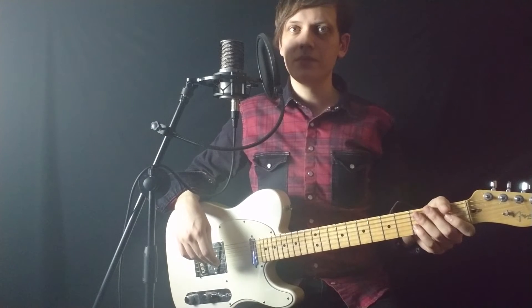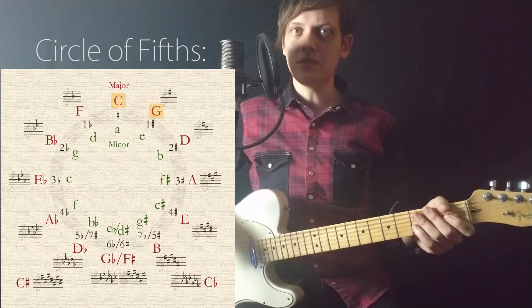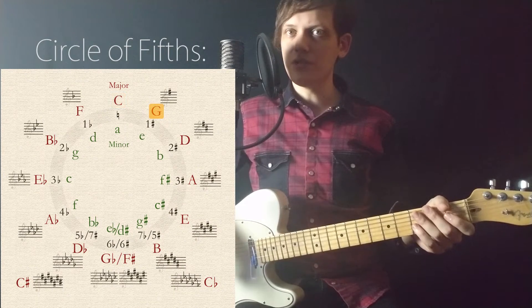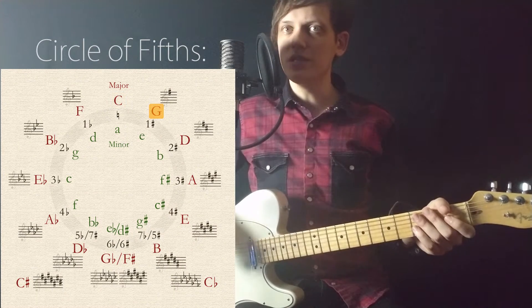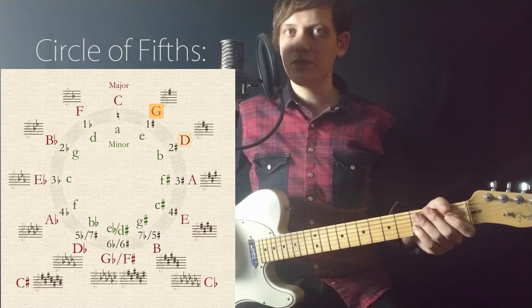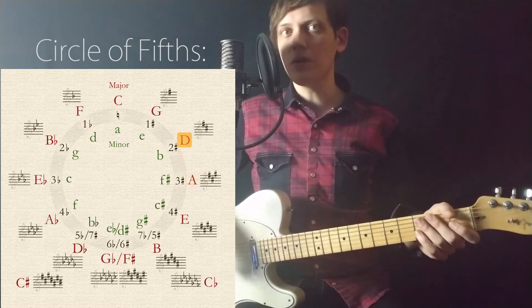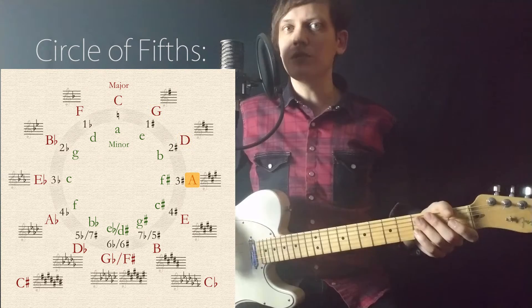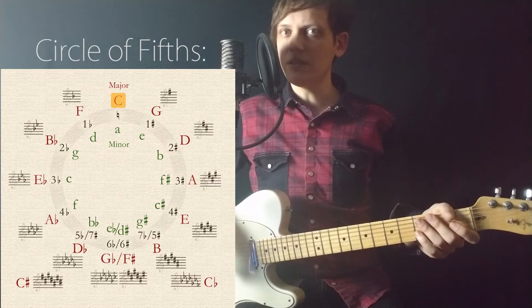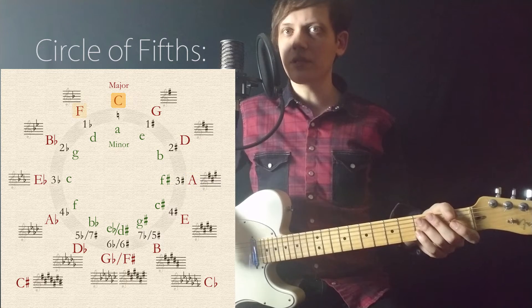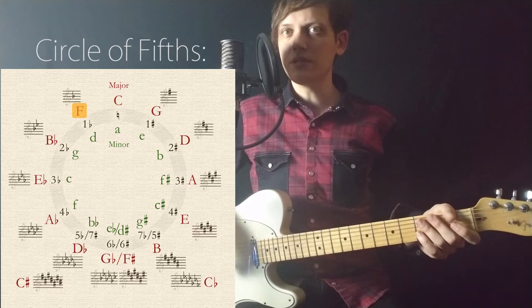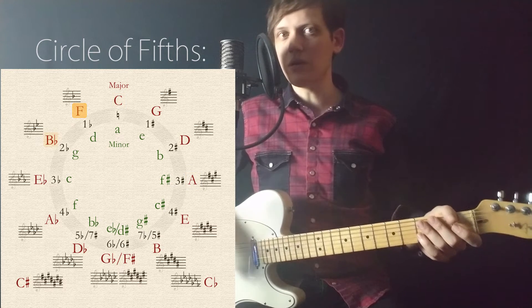But what about the fourths then? An inverted fourth is a fifth. The fifth of C is G, so G is the next key. The fifth of G is D, the fifth of D is A, and so on. As for the flats, the fourth of C is F, the perfect fourth of F is B flat, and so on.